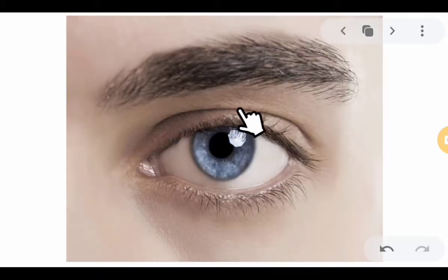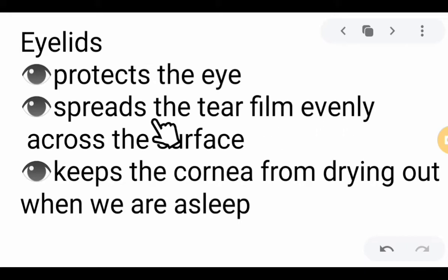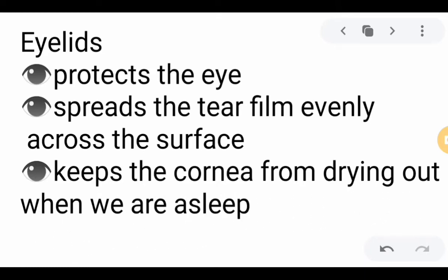Then we also have here the eyelids. The eyelids protect the eye; they spread the tear film evenly across the surface as they close. It is important because the fluid in our eyes must be kept moist, so they spread that liquid evenly throughout the surface of the eye. It also keeps the cornea from drying out when we are asleep, aside from blocking the light.